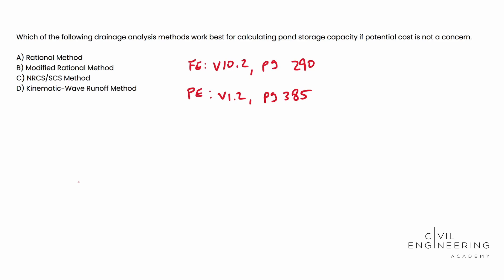And SCS ponds are actually going to end up being approximately 75% larger than rational. So you can kind of think that if you're using rational, you're going to end up with a smaller pond, but you kind of don't have that factor of safety. So SCS is going to be a really good, useful tool. It's going to end up being 75% larger than the rational method.